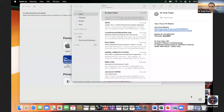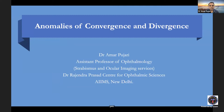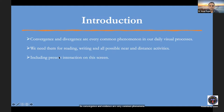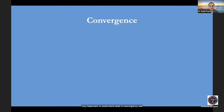Thank you, sir, for the kind introduction. Good evening everyone. Today I will be talking on anomalies of convergence and divergence. Convergence and divergence are very common phenomena we encounter in our daily visual processes — we need them for reading, writing, and all near and distance activities. It is very important to understand what convergence and divergence are, and what anomalies can affect a person.